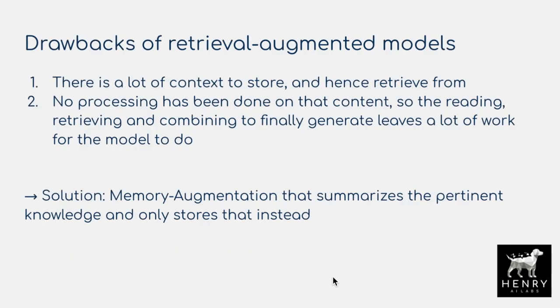These retrieval augmented systems are interesting — you build big document indexes of previous conversations, scientific papers, news articles, and Wikipedia, encoding all documents as vectors and doing nearest neighbor search to return relevant context. However, there are some notable drawbacks of retrieval augmented models that may make memory augmentation a better strategy. First, if there's a lot of context to store and retrieve from, you need to build these big document indexes, which creates storage costs and requires inference-time query-embedding comparisons against a large document index.